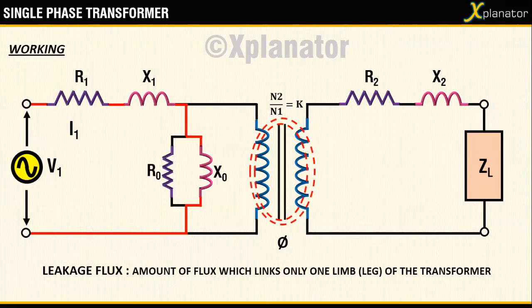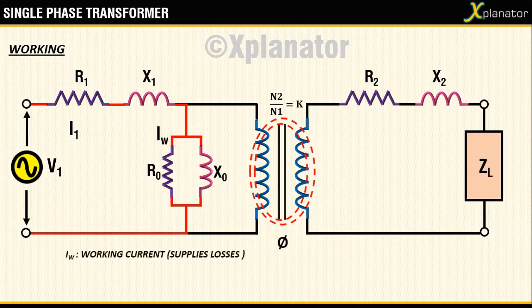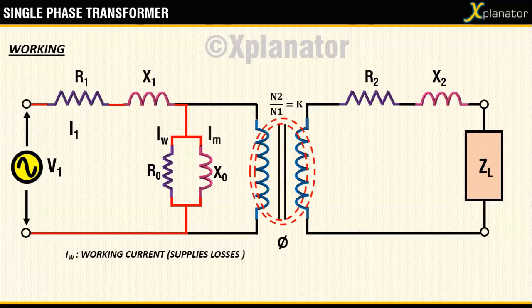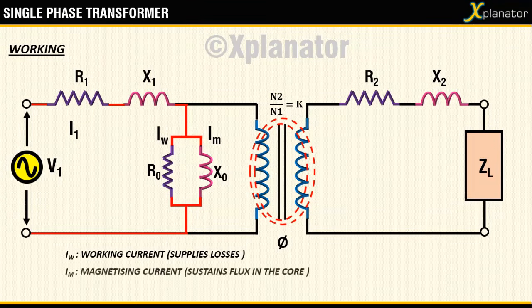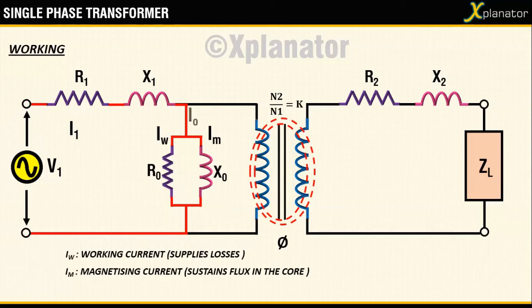The leakage current associated with the leakage flux is shown by current Iw. The current which does the useful work, that is, which magnetizes the core is shown as Im. Both these currents Iw and Im add up to give the no load current I0.